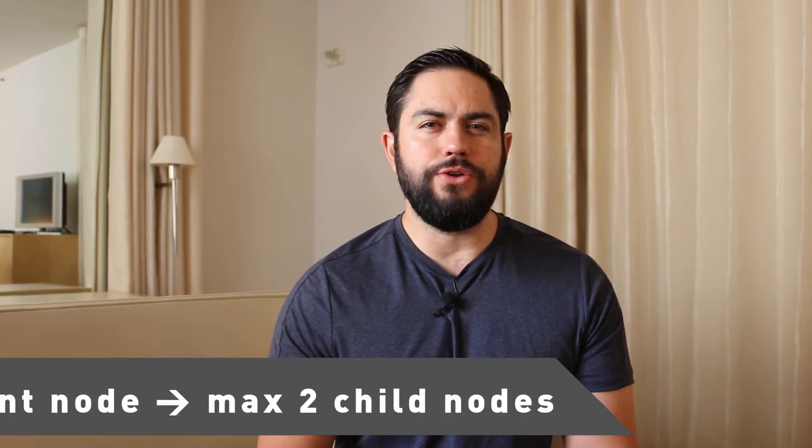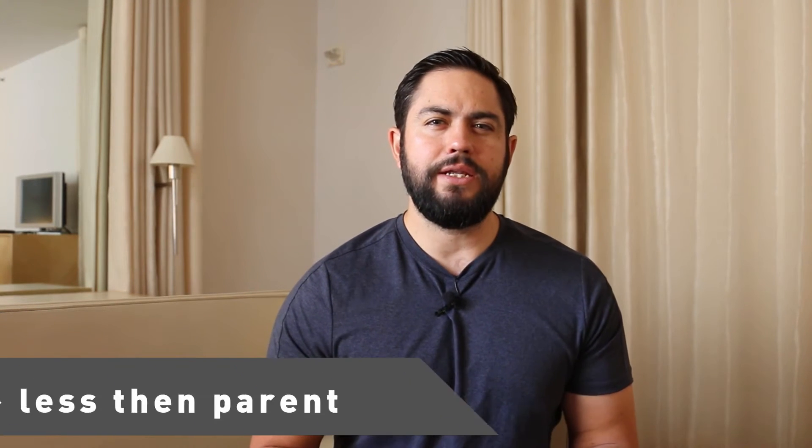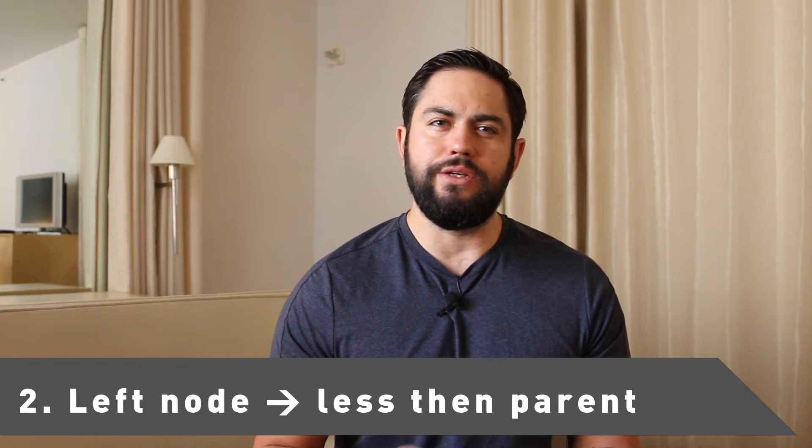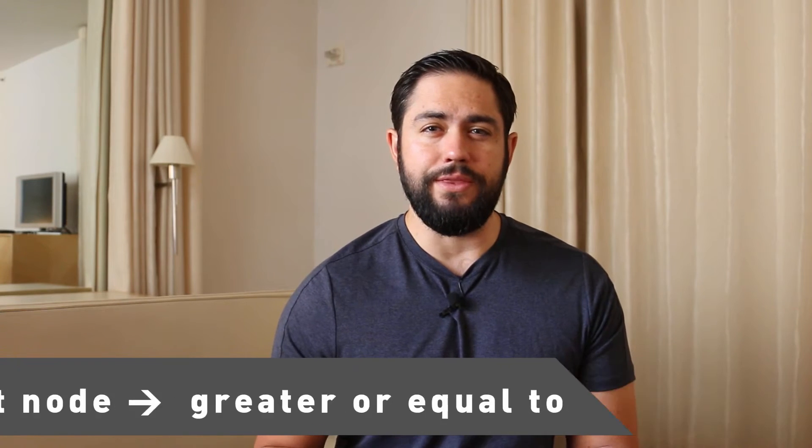Let's begin by first establishing some rules for binary search trees. First, a parent node has at most two child nodes. Second, the left child node is always less than the parent node. And third, the right child node is always greater than the parent node.